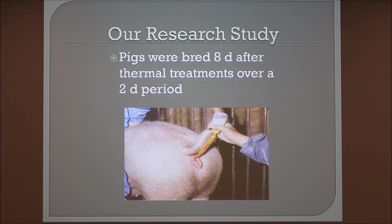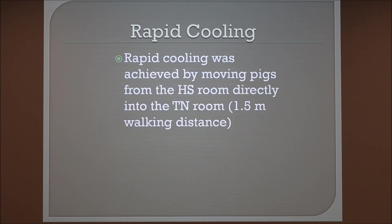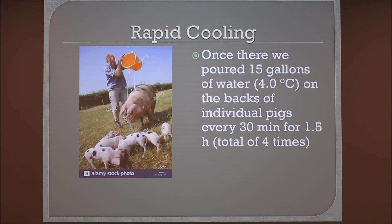Pigs were bred using AI, or artificial insemination, as the picture shows. For the rapid cooling sub-treatment, this was achieved by moving pigs from the heat stress room directly into a thermal neutral room, which was 1.5 meters walking distance away. Once moved, we poured 15 gallons of water at approximately 4 degrees Celsius on the backs of individual pigs for 30 minutes, repeated four times over an hour and a half.